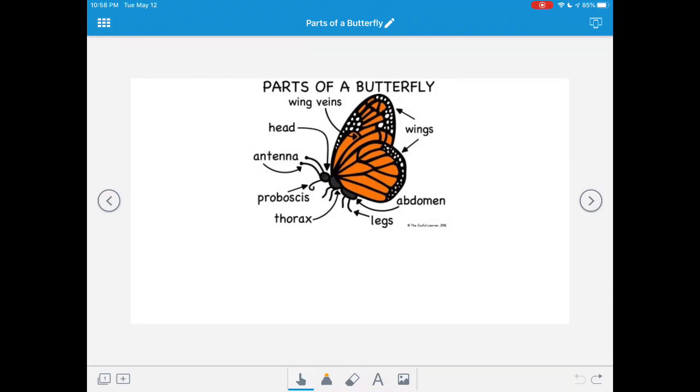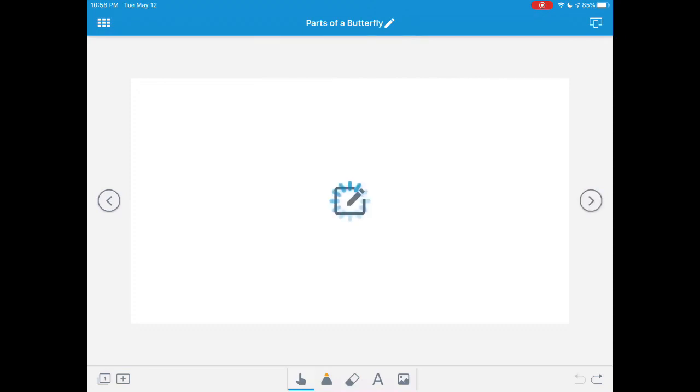Now that we have learned about the parts of the butterfly, let's draw a butterfly and label it with the different parts. Please pause the video and go find a piece of paper. You could get out your drawing journal or use another piece of paper around your house. You'll need your pencil box for this part of the lesson.